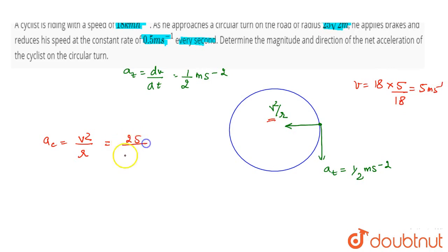So, v² is 25, and the radius is 25√2. Therefore, centripetal acceleration is 1/√2 meter per second square.